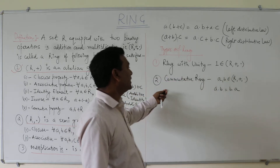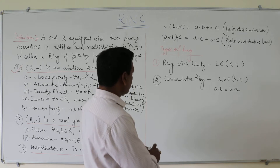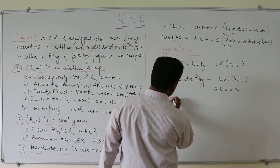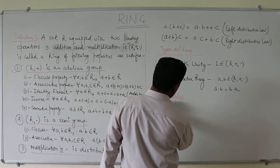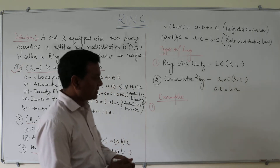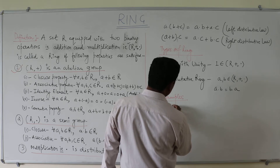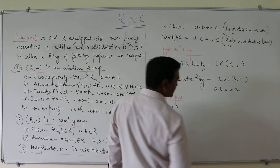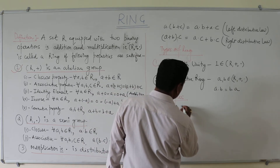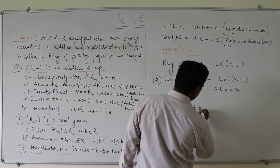Now we will see an example. The first example is: let us consider R equals the set of integers, that is R = {0, ±1, ±2, ±3, ...}. We will see whether it is a ring or not.